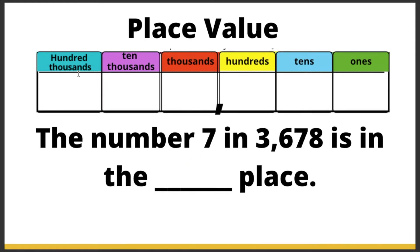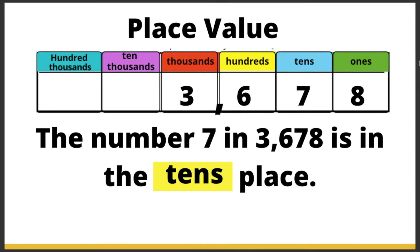The number 7 in 3,678 is in the blank place. What place do you think the number 7 belongs to? Remember to look at the comma to help guide how you place your numbers. The number 7 is in the tens place — if we put our numbers in the place value chart, 7 belongs to the tens place.